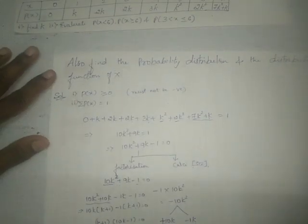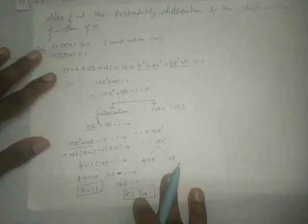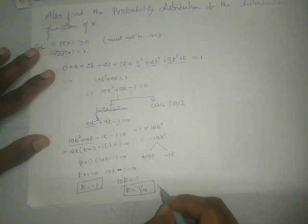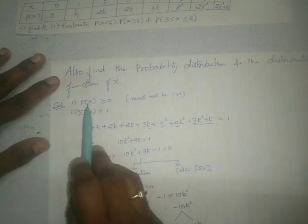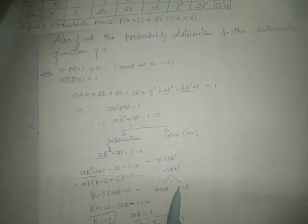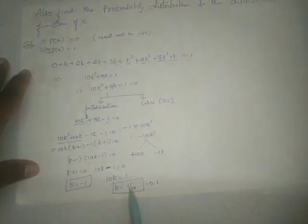We have solved using both properties and got two values: K equals minus 1 and K equals 1 by 10, which is 0.1. Applying the first property — K must not be a negative value — so we discard K equals minus 1 and take K equals 0.1 or 1 by 10.